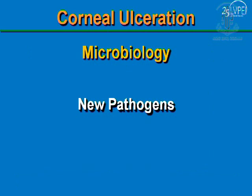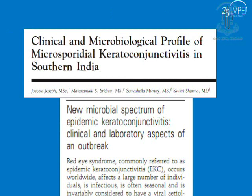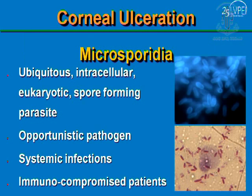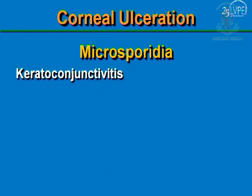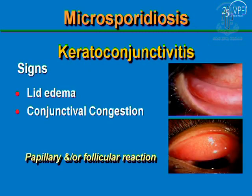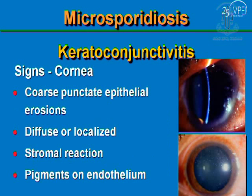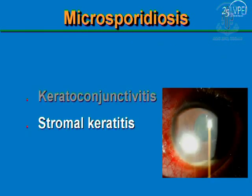Some new pathogens have also emerged in corneal infections, one of which is microsporidia — ubiquitous intracellular spore-forming parasites often considered opportunistic pathogens, primarily isolated from systemic infections in immunocompromised patients. Now there are reports of this organism being isolated from patients with keratoconjunctivitis, characterized by papillary or follicular reaction on the conjunctiva with lid edema mimicking adenoviral keratoconjunctivitis. Corneal signs include coarse punctate epithelial erosions — diffuse or localized — with underlying stromal reaction and even pigments on the endothelium. Another form presents as stromal keratitis mimicking corneal ulceration caused by other pathogens.